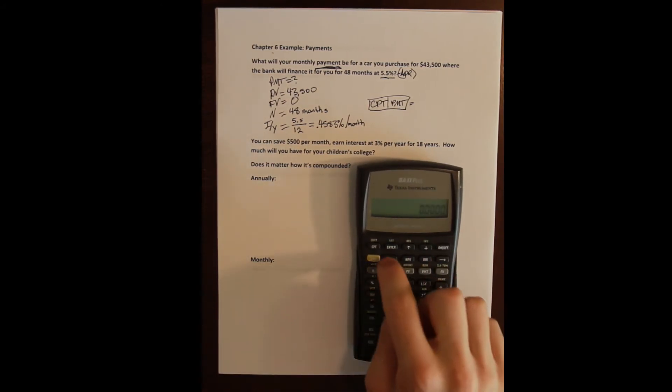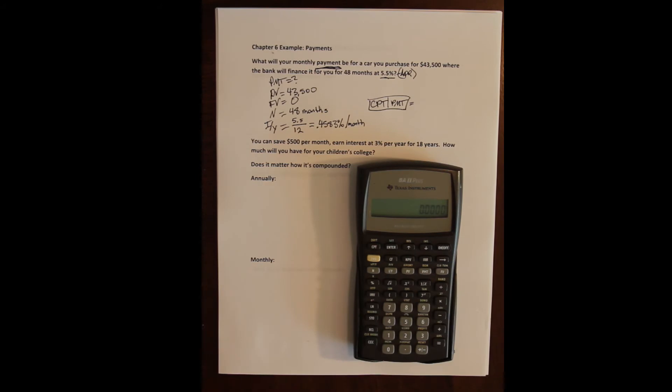First thing we do of course is second and future value. That clears the row that has the time value of money buttons in it. Then we're going to enter in our inputs. Our present value is forty three five hundred. That is a cash inflow so it's a positive value. So forty three five hundred and then present value.